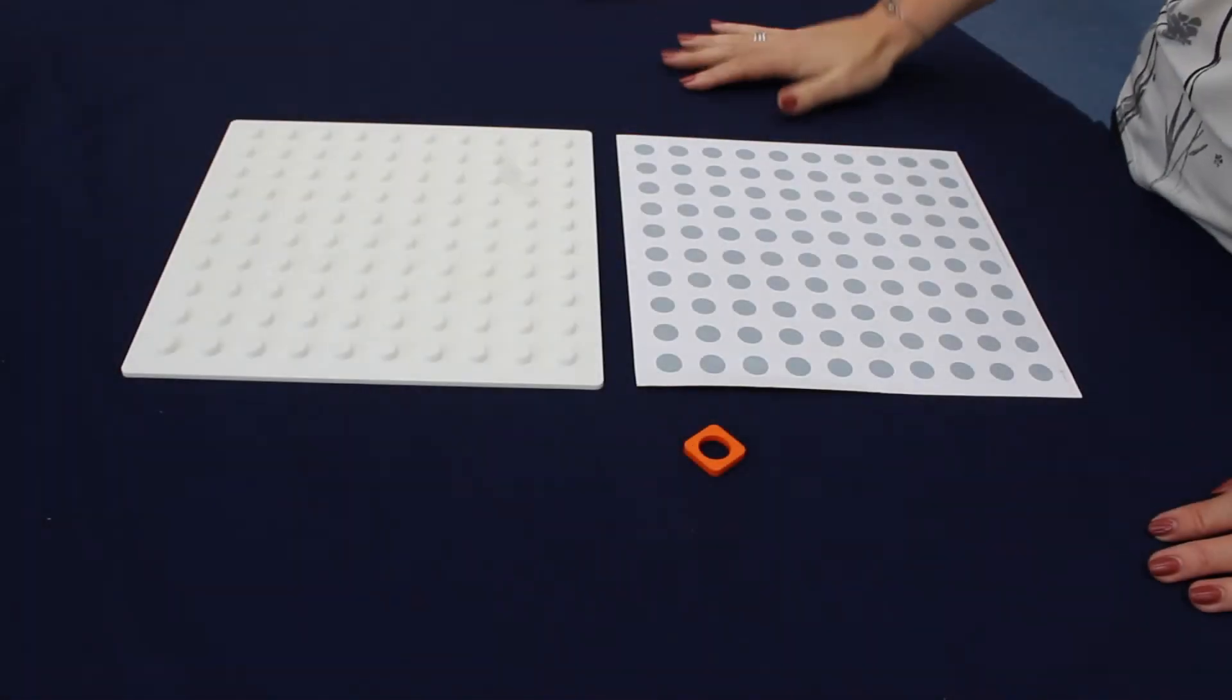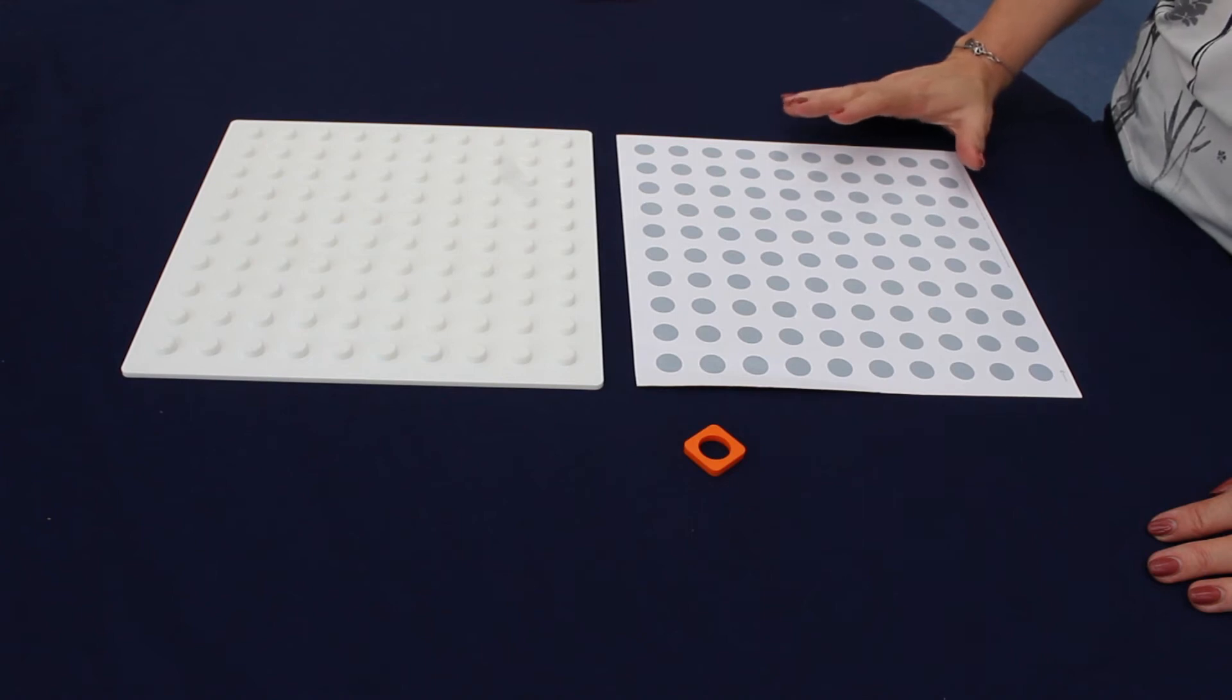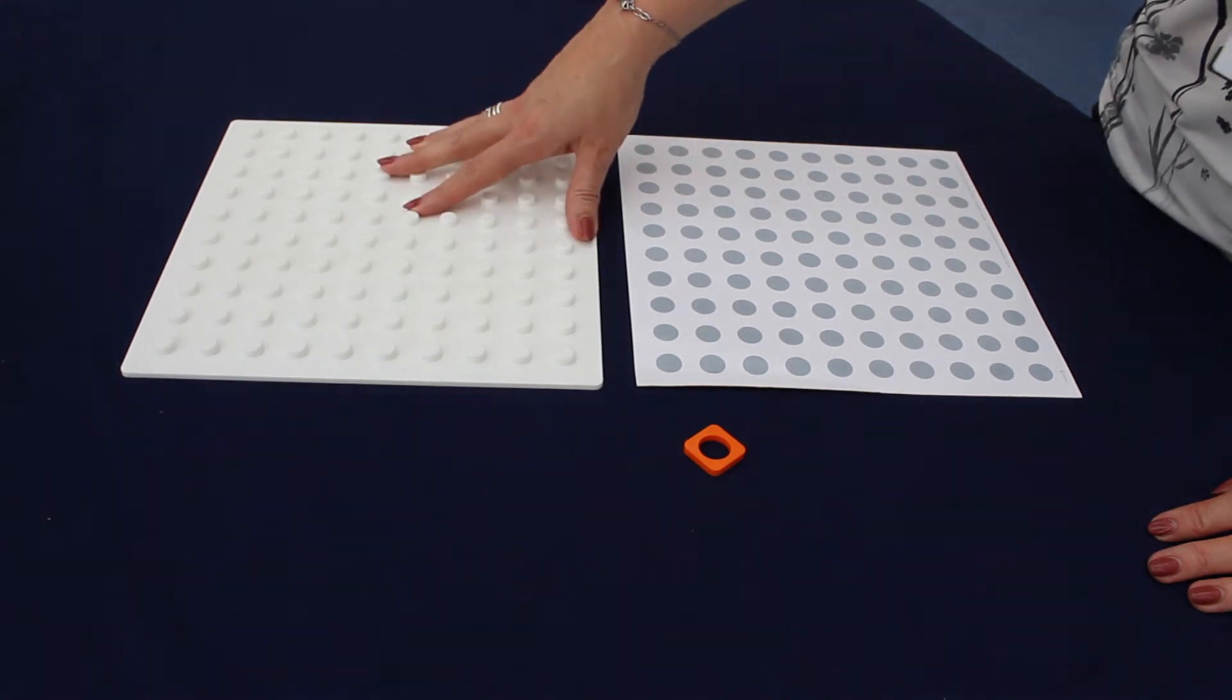So to exemplify the CPA approach, we can look at how Numicon resources develop that. Here we've just got one particular thing which is the baseboard.